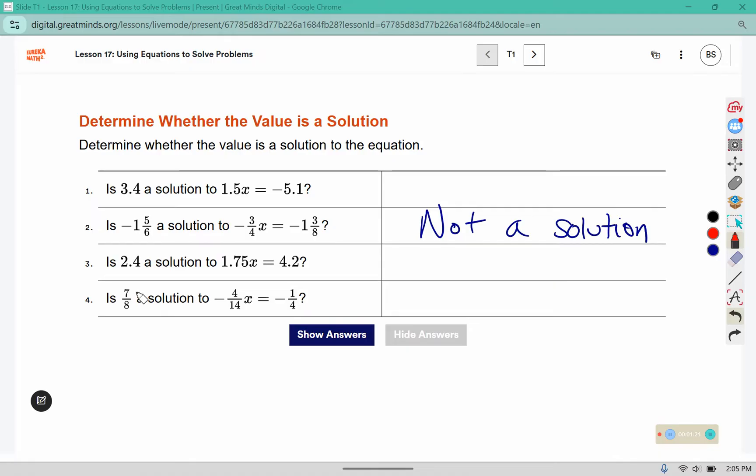Looking at this one down here, is 7/8 a solution? So we're replacing that x value with the number 7/8 to see if that equals negative 1/4. Well, negative 4 times 7 is negative 28. 14 times 8 is 112. And 28 fits into 112 exactly 4 times and into 28 exactly 1 time. So this is the same as negative 1/4. It reduces to negative 1/4, which is equal to negative 1/4.